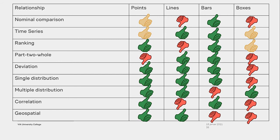For a distribution, look for words such as: frequency, distribution, range, concentration, normal curve, normal distribution, or bell curve. For a correlation, listen for words such as: increases with, decreases with, changes with, varies with, caused by, affected by, or follows.